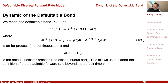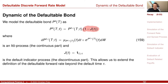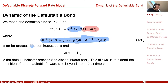Let us quickly go through this. We were looking at a defaultable bond. The first issue we had is that the defaultable bond has a discontinuous part — it can jump down to zero. A very nice thing is that we split the discontinuous part, this default indicator function, from the process. So we have a continuous part.